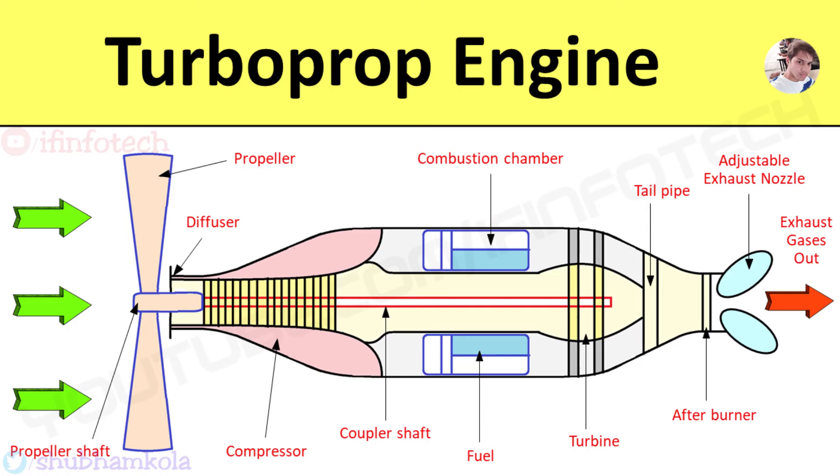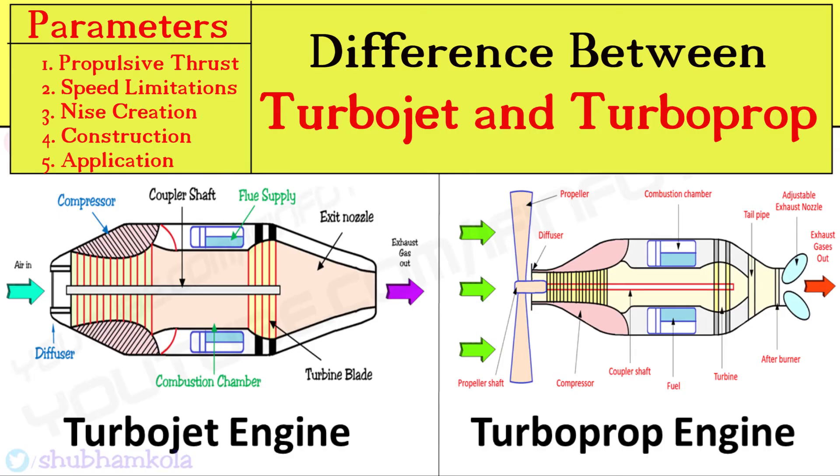Turboprop engines have low specific weight and are simple in construction with low mechanical vibration. These engines are used in powered helicopters and marine applications. Now we will see the differences between turbojet and turboprop engines.